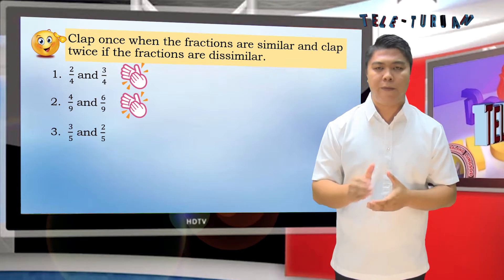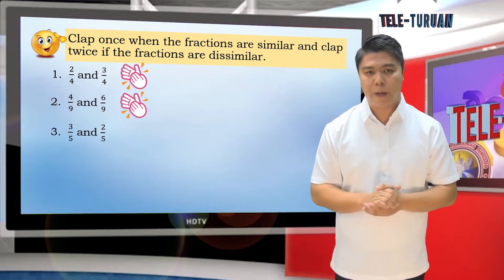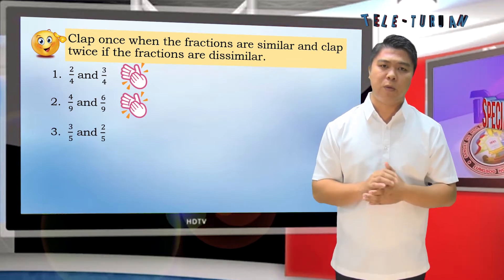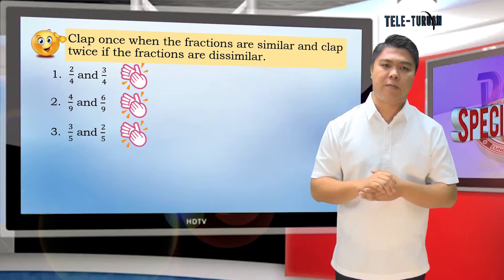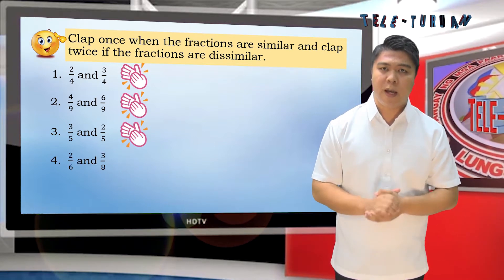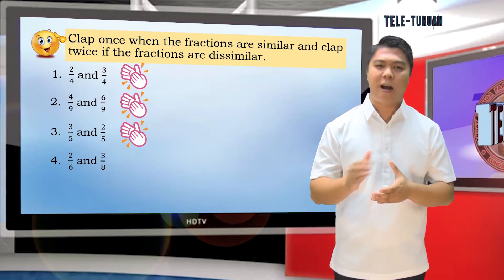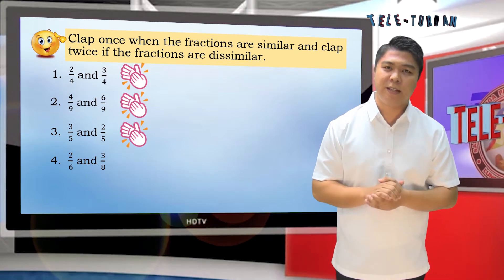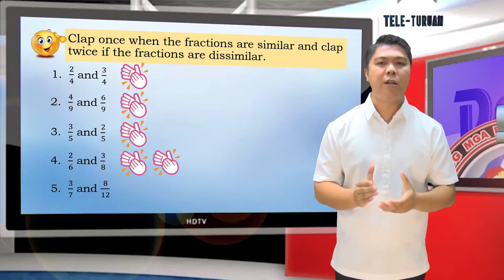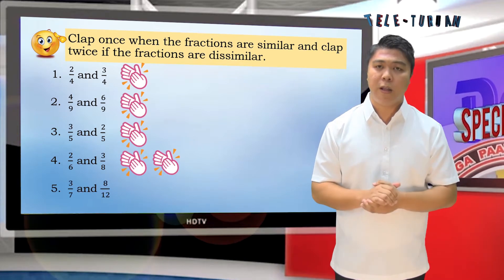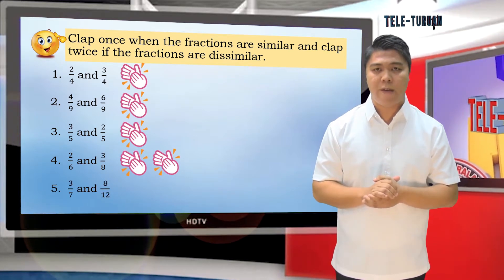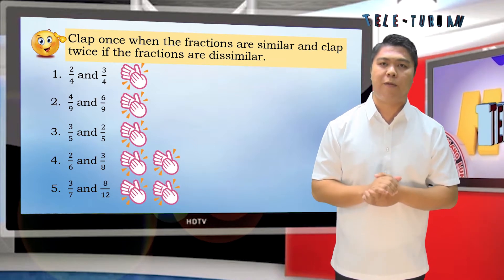Number 3: 3 fifths and 2 fifths. Very good! 3 fifths and 2 fifths are similar fractions. Number 4: 2 sixths and 3 eighths. You are right! 2 sixths and 3 eighths are dissimilar fractions. Number 5: 3 sevenths and 8 twelfths. Very good! 3 sevenths and 8 twelfths are dissimilar fractions.